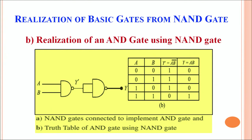Similarly we are able to realize all other gates using a NAND gate. To realize an AND gate using NAND gates, we want to get the output of the AND gate from a combination of NAND gates. In the diagram, two NAND gates are arranged so that the first NAND gate takes inputs A and B, and its output is fed directly into a second NAND gate. This arrangement of two NAND gates gives us an output equal to that of the AND gate. Looking at the truth table: when A is 0 and B is 0, Y dash equals 1.